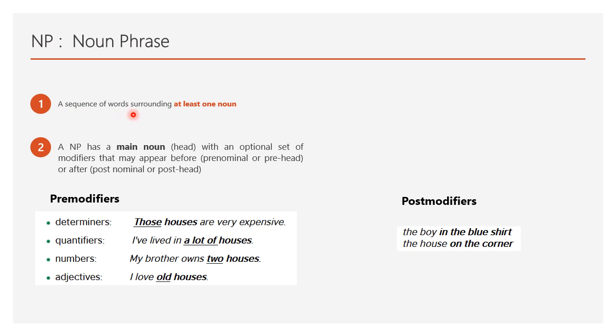Noun phrase is a sequence of words surrounding at least one noun. This noun phrase contains a noun term and a set of modifiers. This modifier can be pre-modifier or post-modifier. Some examples: He is watching a movie. He is a noun phrase. The boys are playing. The boys constitute the noun phrase. The is a pre-modifier. Another example: Those houses are very expensive. Those houses constitute the noun phrase. So, the noun phrase can have the pre-modifier. Some post-modifiers are: The boy in the blue shirt. The boy in the blue shirt emphasizes the noun word.